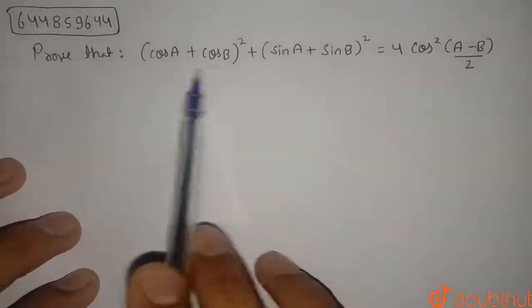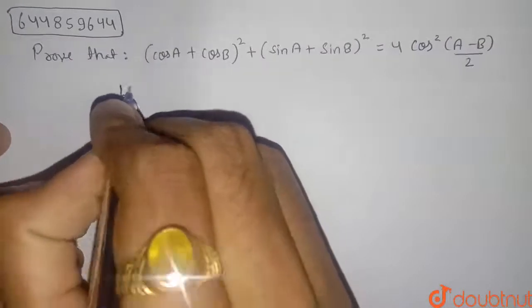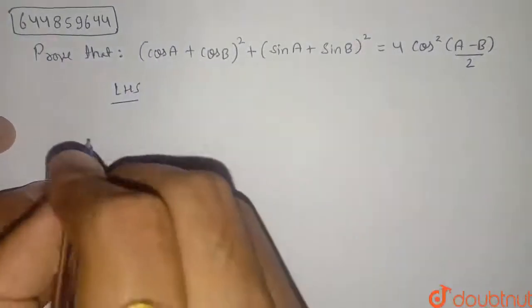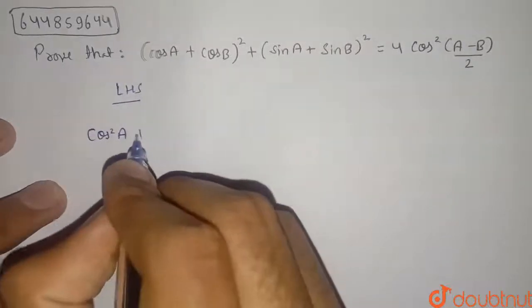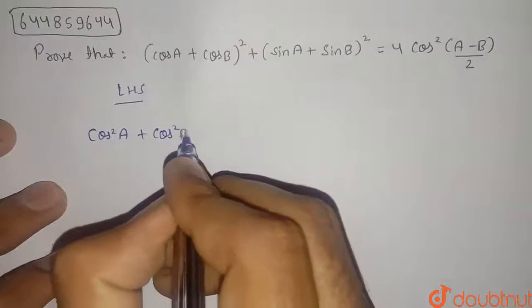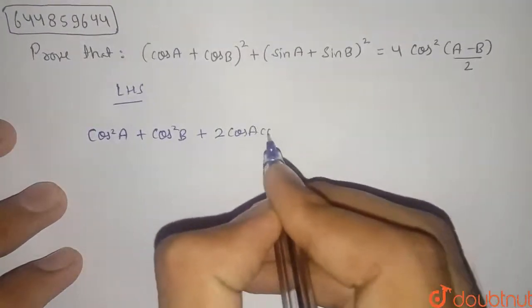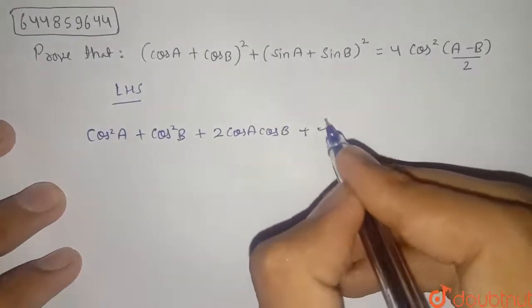I am taking the left hand side first. Taking LHS, opening these whole squares, so it will be cos² A plus cos² B plus 2 times cos A cos B.